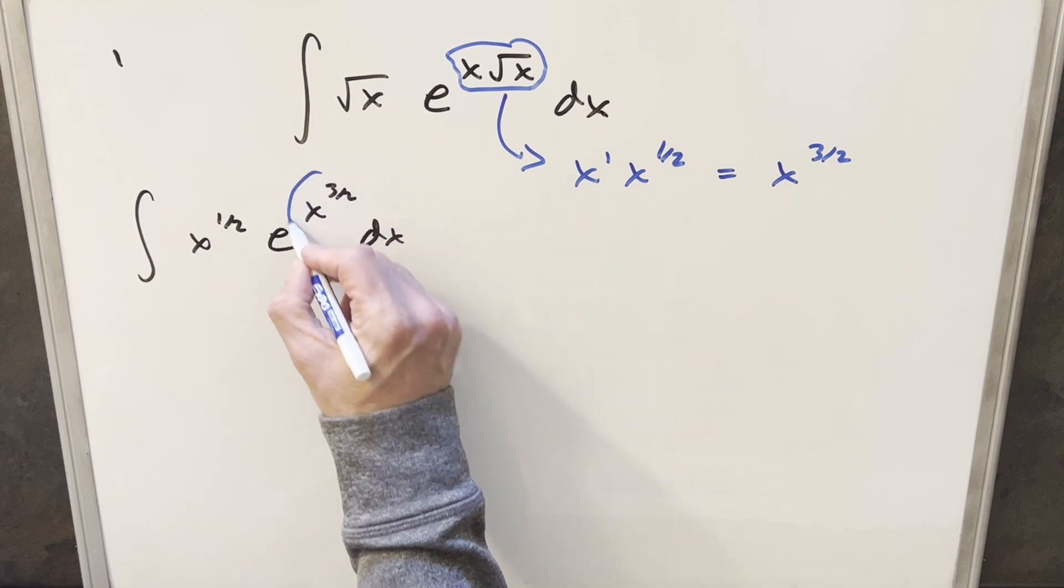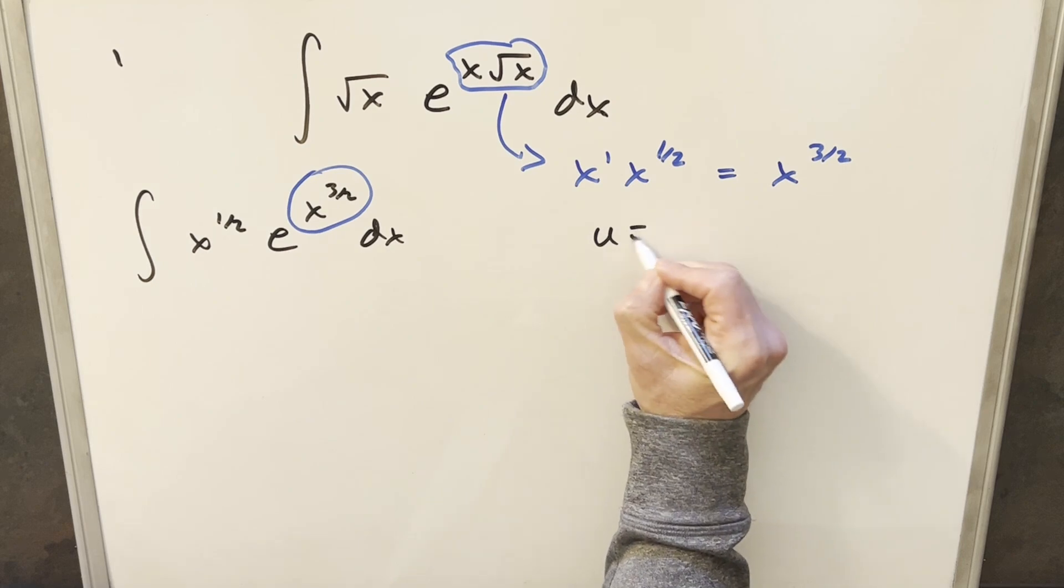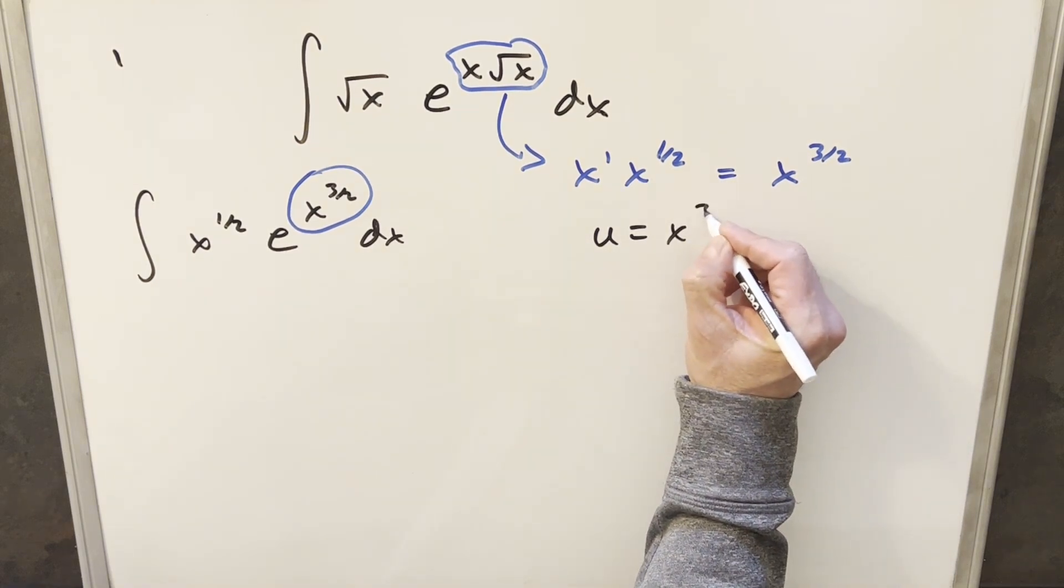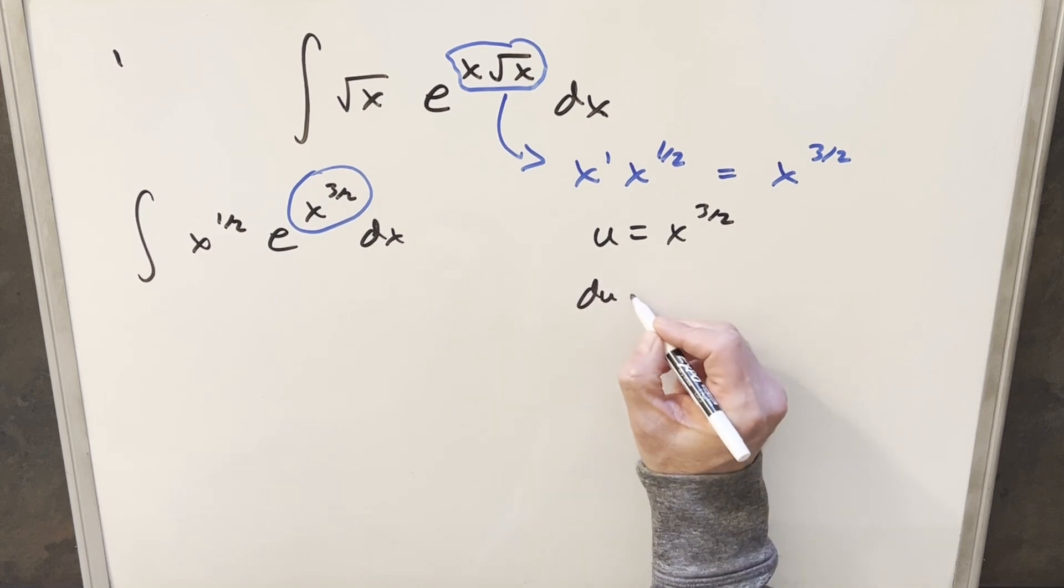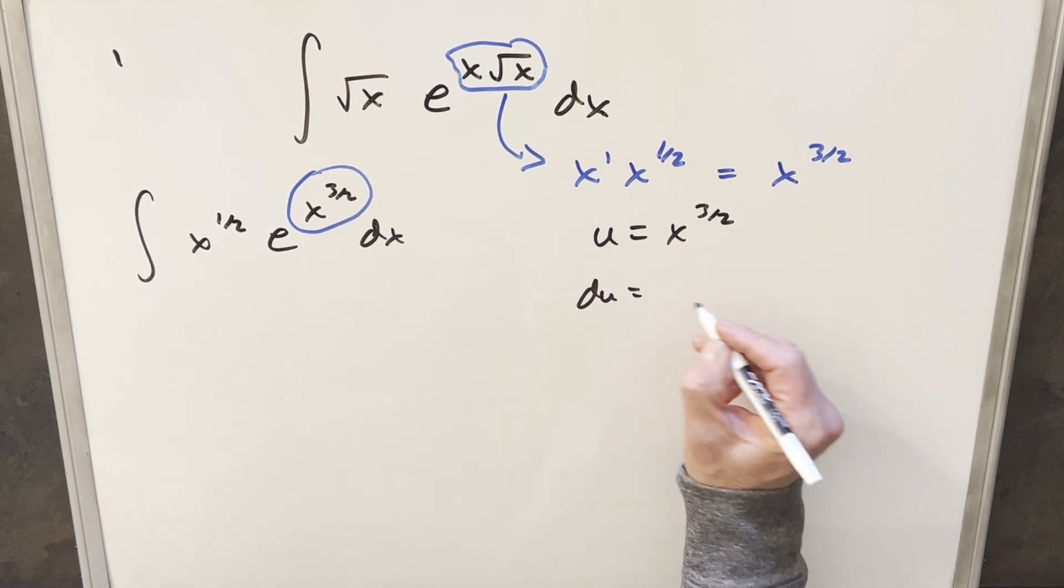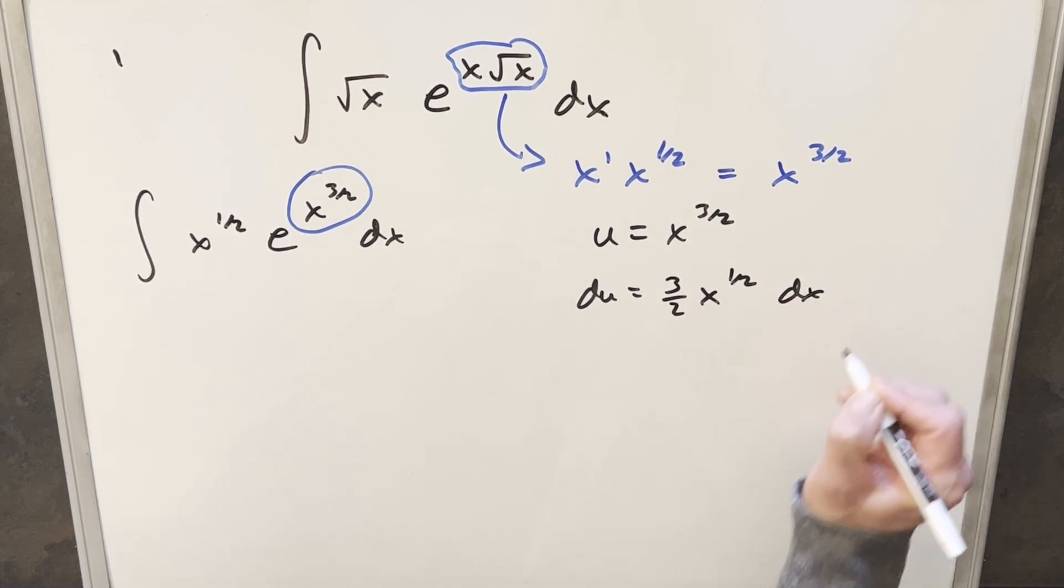But still, this is a little difficult to deal with, so I want to simplify this. So we'll do a u substitution here. I'm going to call my u just equal to this whole exponent x to the 3 halves. I'll take a derivative to find a du value. So du is going to be, we'll use power rule here, and this is going to be 3 halves x to the 1 half dx.